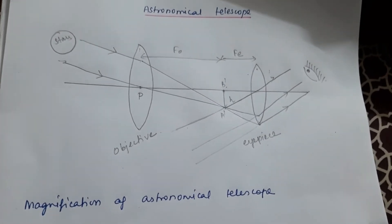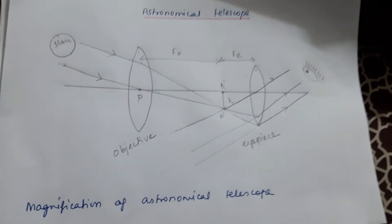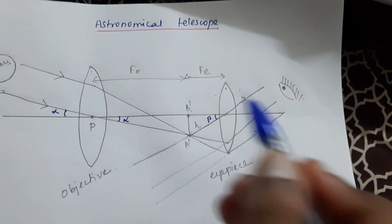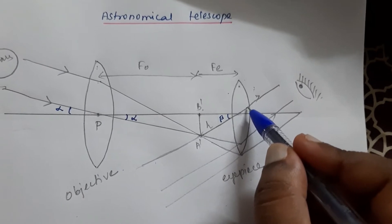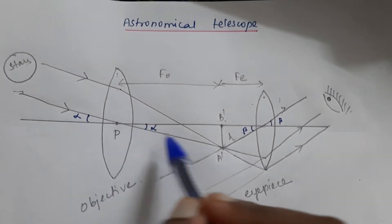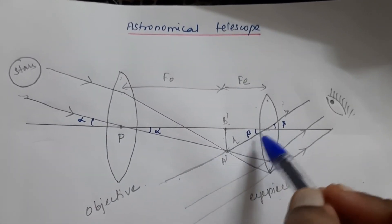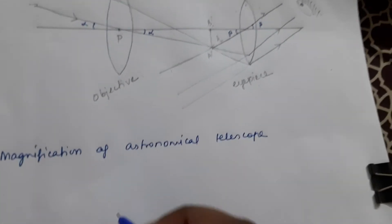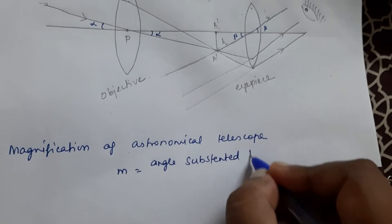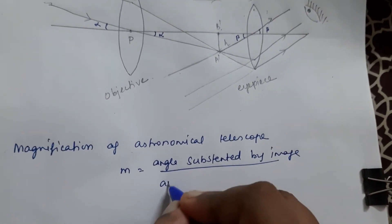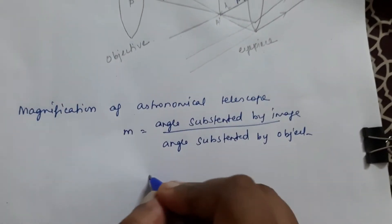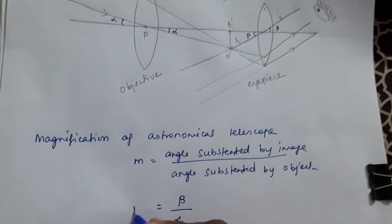Let beta be the angle subtended by the image and alpha be the angle subtended by the object. The angle made by the incident ray is alpha, and the angle made by the image is beta. Angular magnification is defined as M equals the angle subtended by the image divided by the angle subtended by the object, that is M = beta / alpha.